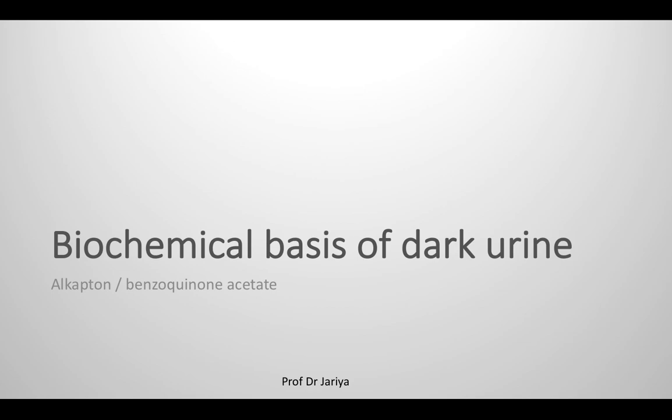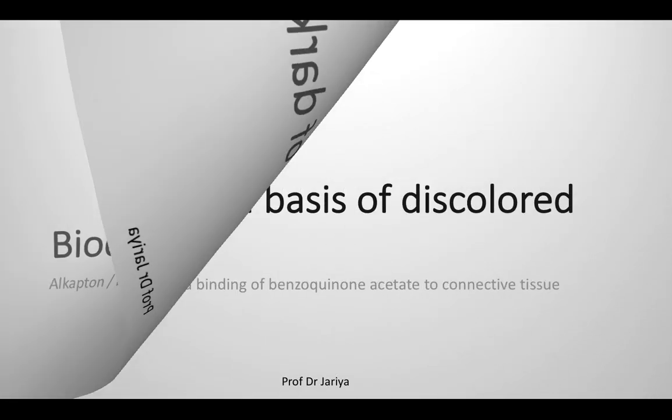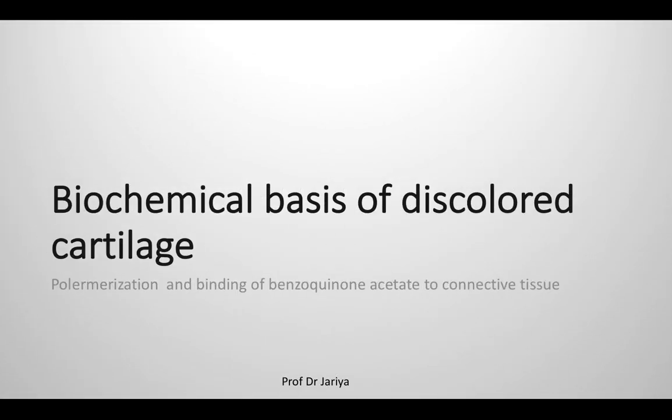Coming to the biochemical basis of dark urine: homogentisate accumulates and auto-oxidizes, forming a dark pigment benzoquinone acetate, which discolors the urine. Homogentisate also polymerizes and binds to connective tissue. Later in life, chronic accumulation of this pigment in cartilage is called ochronosis, and it may cause joint pain and crippling arthritis.